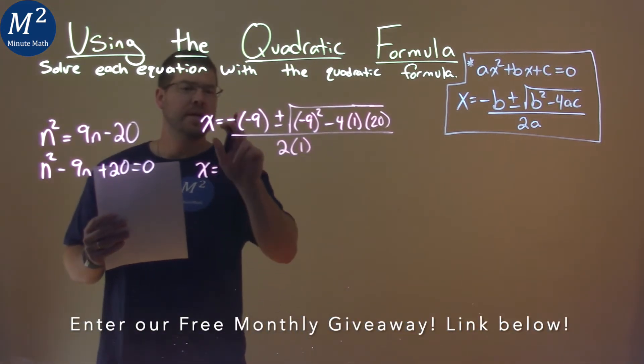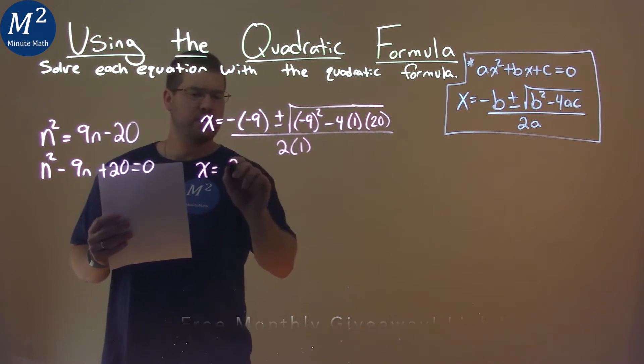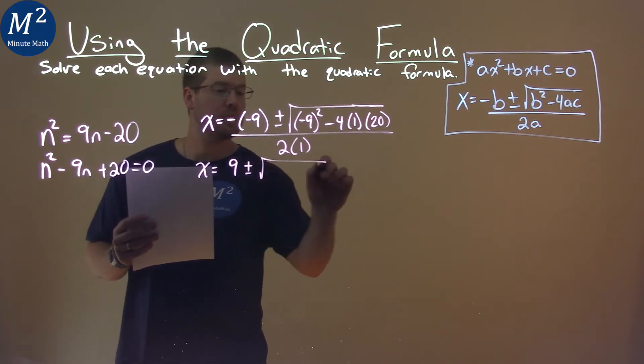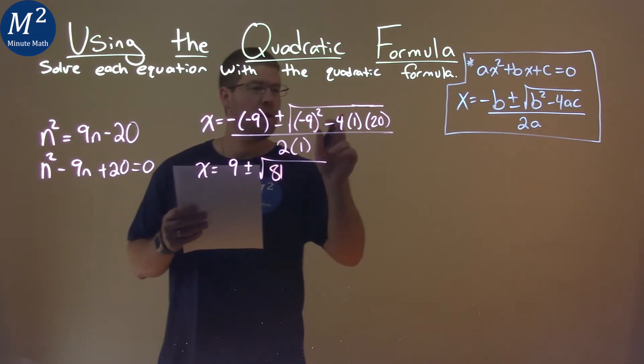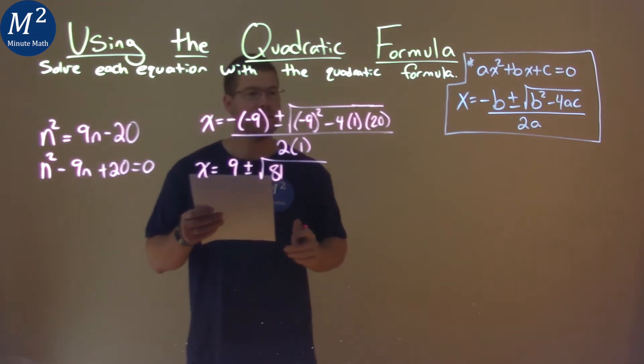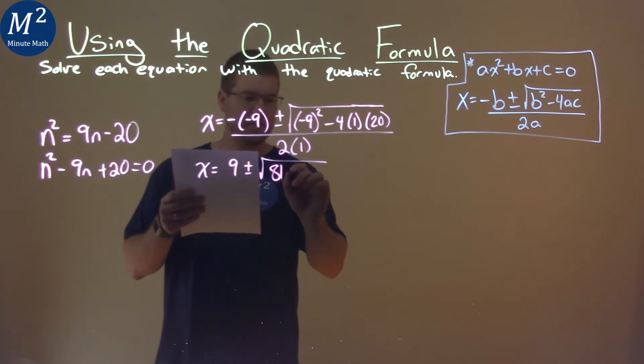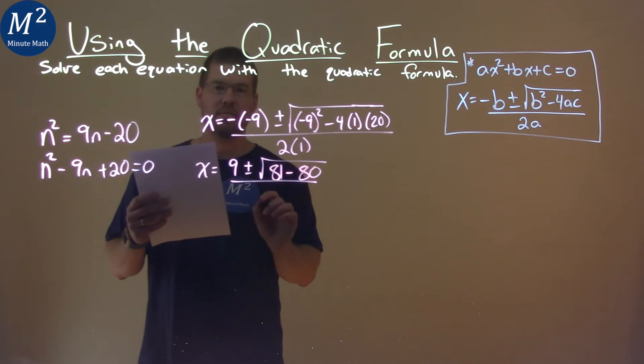So let's break it down. Negative negative 9 is a positive 9, plus or minus, well, 9 squared or negative 9 squared is a positive 81. 4 times 1 times 20 is 80, and we're subtracting that, so minus 80 here. All over 2 times 1 is 2.